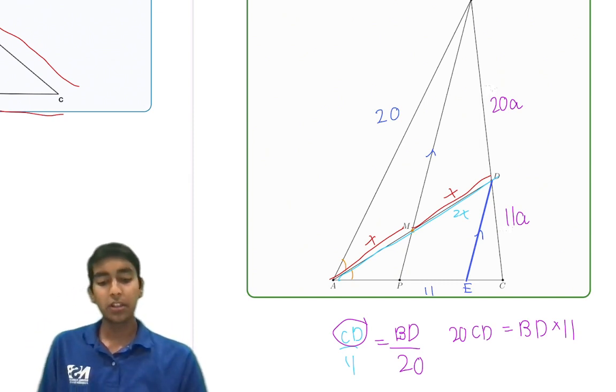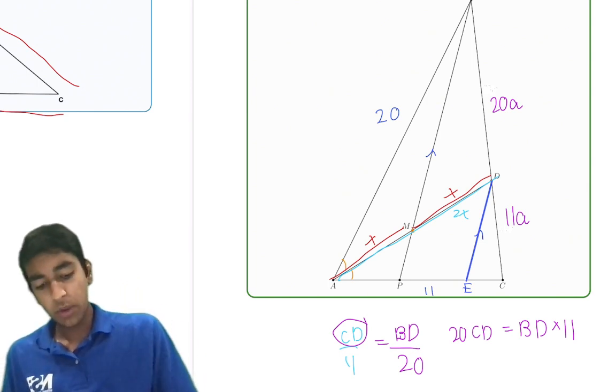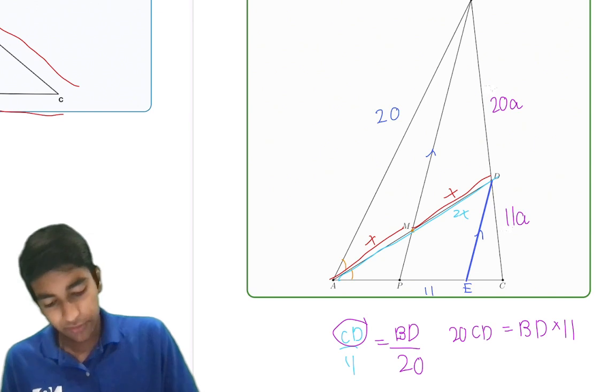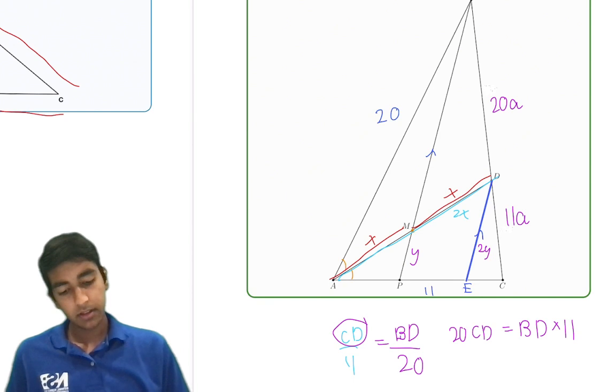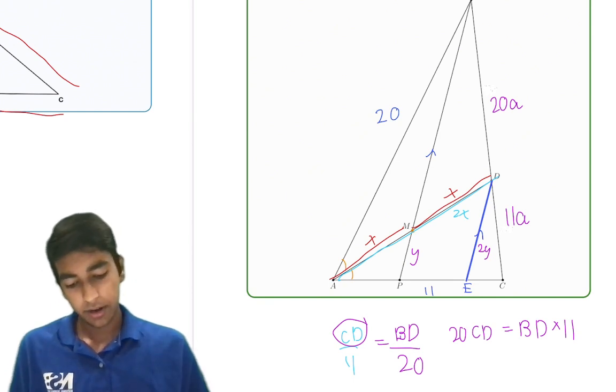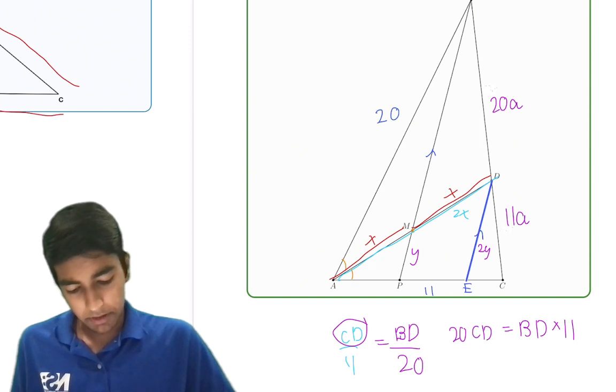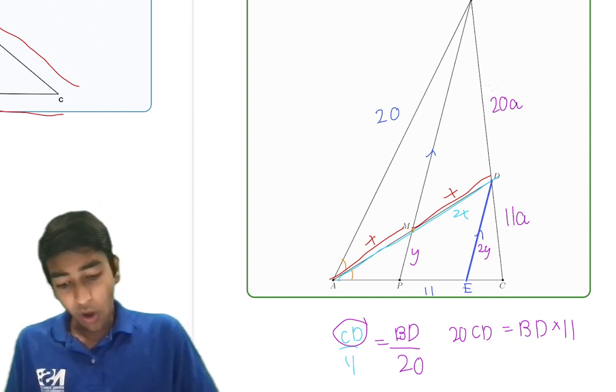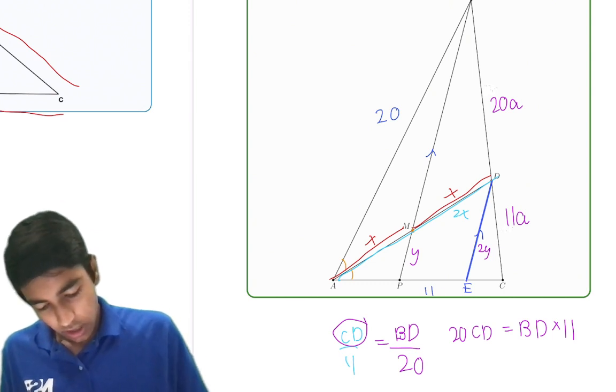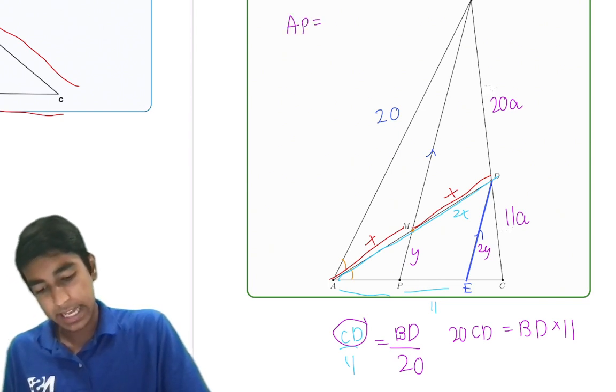So now it just comes down to using this similarity condition somehow. We know that the ratio is 1 to 2. So if MP, let's call that Y, then DE will be 2Y, because 2 times more. But that's still not enough to solve the problem, because we need AP somehow. Another thing we know is that we have AP equals PE.